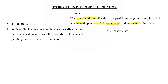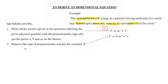So centripetal force F is proportional to mass to the power a, velocity to the power b, and radius to the power c. Step two: remove the proportionality sign, put an equals sign, and introduce a dimensionless constant k. The expression now reads F = k · mᵃ · vᵇ · rᶜ.